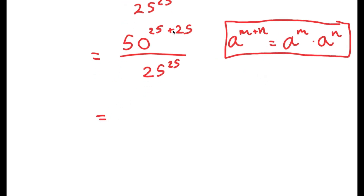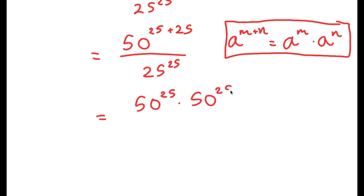So 50 to the power of 25 plus 25, using this property, turns into 50 to the power of 25 times 50 to the power of 25, and I still have this over 25 to the power of 25.